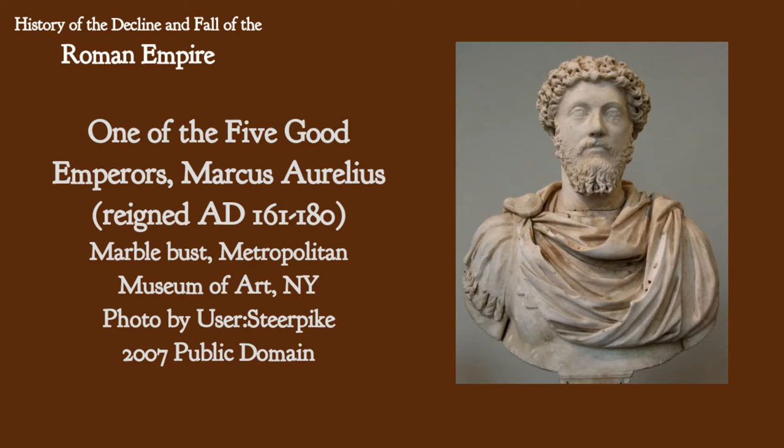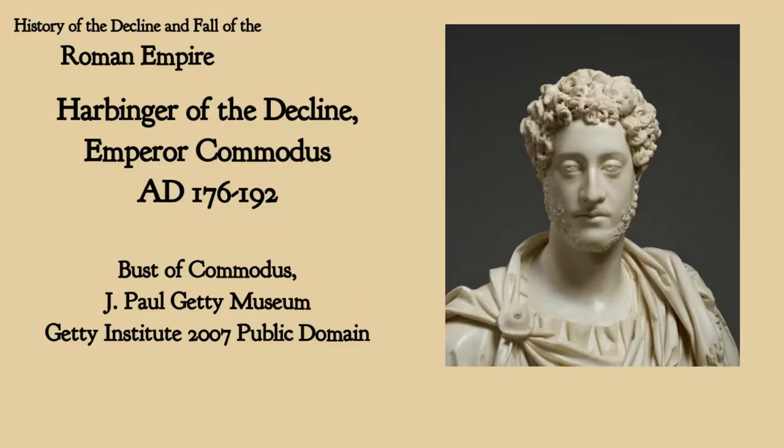The decline of Rome starts, according to Gibbon, with the reign of Lucius Verus and his successor Commodus, who was especially brutal and tyrannical. Gibbon goes into some details about the crimes and repression of Commodus, whose full name was Lucius Aelius Aurelius Commodus Augustus Herculeus Romanus Exuperatorius Amazonius Invictus Felix Pius — quite a mouthful. At the end he was assassinated, of course, which was a pretty common way for Roman emperors to go.